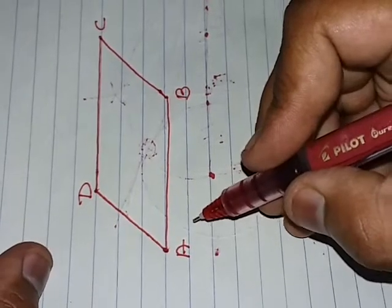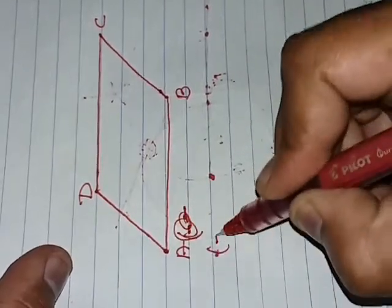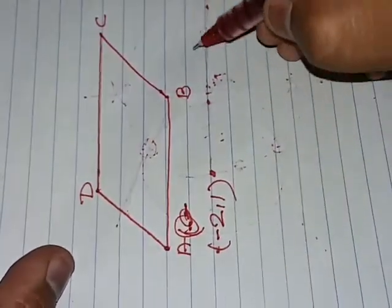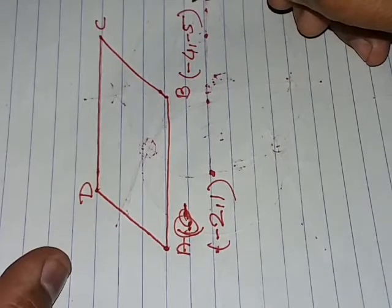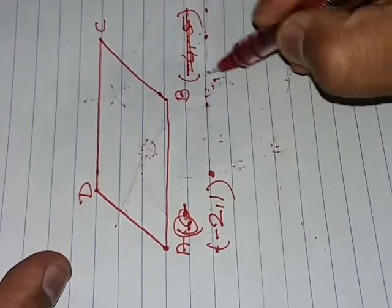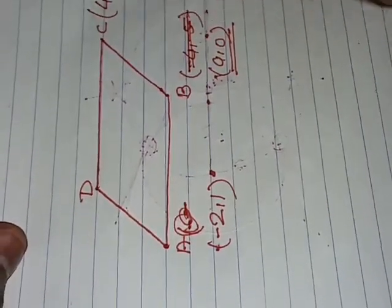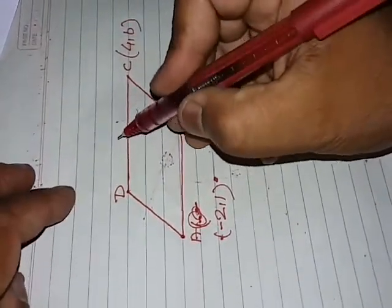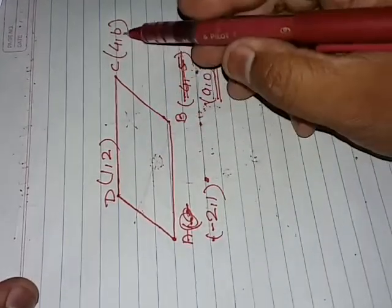Now, the coordinates given are: A is (-2,1), B is (a,0), C is (4,b), and D is (1,2). The question is that the value of 'a' is unknown and the value of 'b' is also unknown — we need to find them.